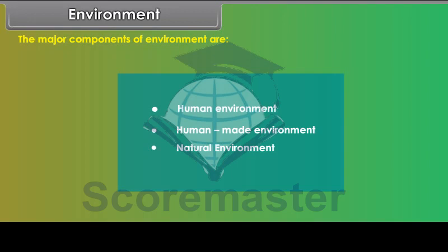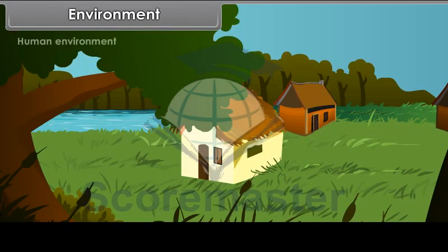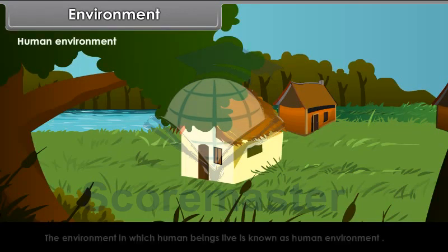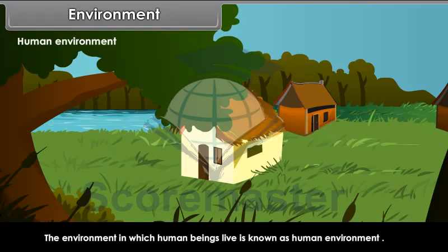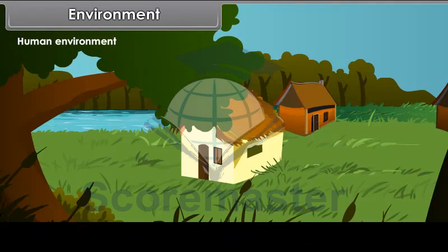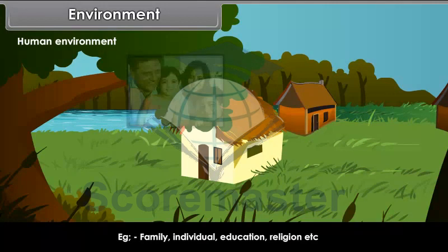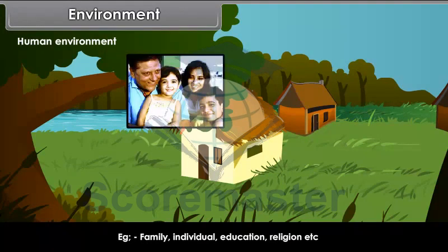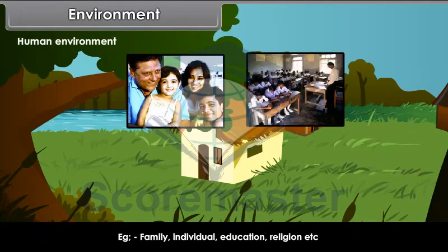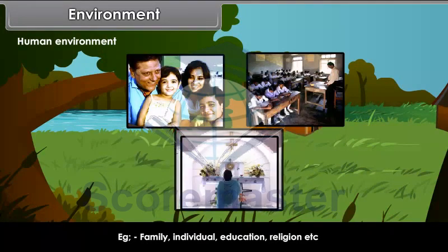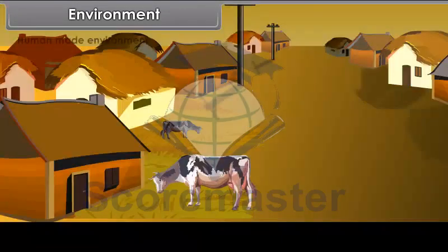Human environment. The environment in which human beings live is known as human environment. Examples include family, individual, education, religion, etc.